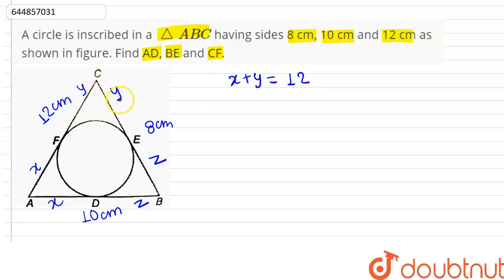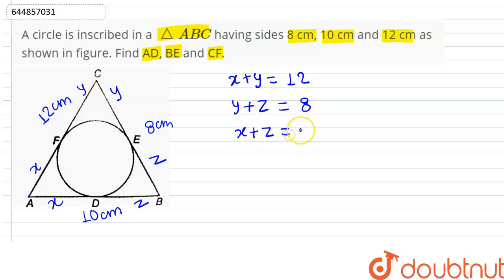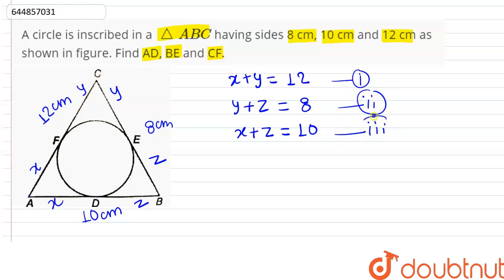So what we can say: X plus Y equals 12 from AC — this is equation one. Y plus Z equals 8 — this is equation two. And X plus Z equals 10 — this is equation three.